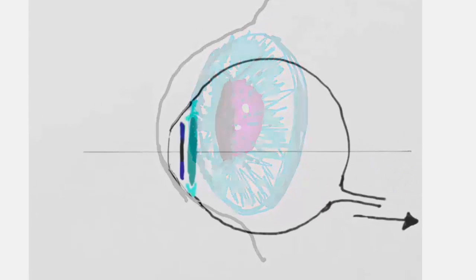The retina is where all the action is at, psychology-wise. It is a light-sensitive membrane that lines the inside of the back of the eyeball. It is filled with all the photoreceptors.